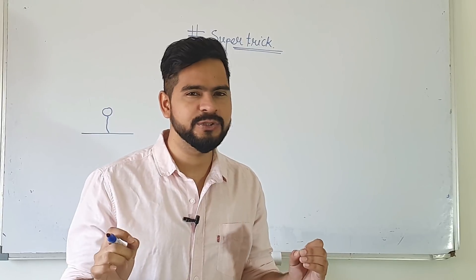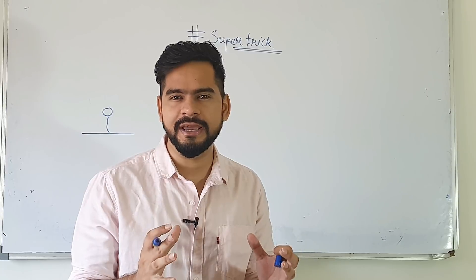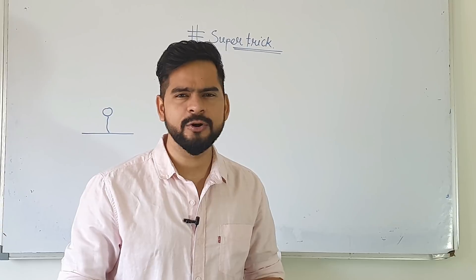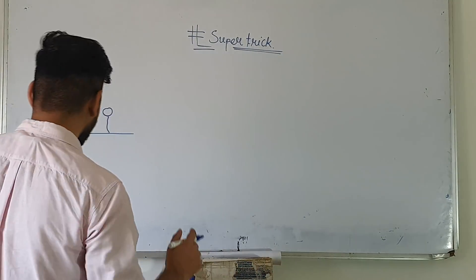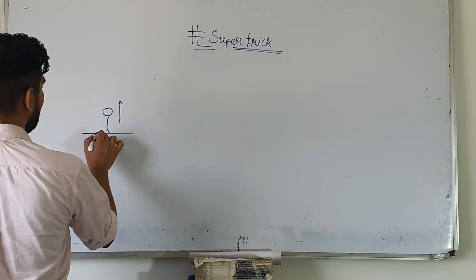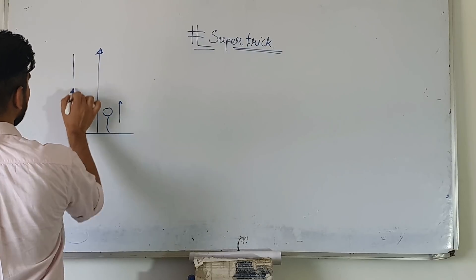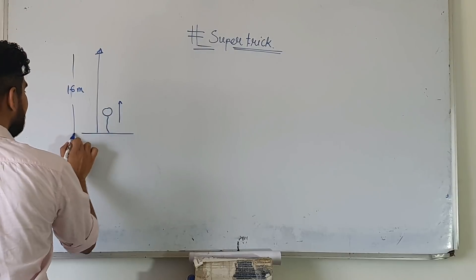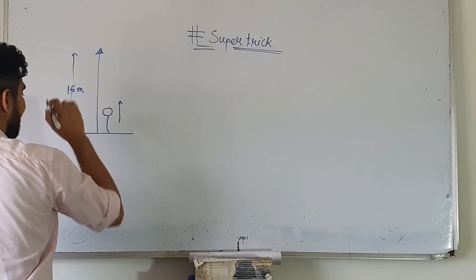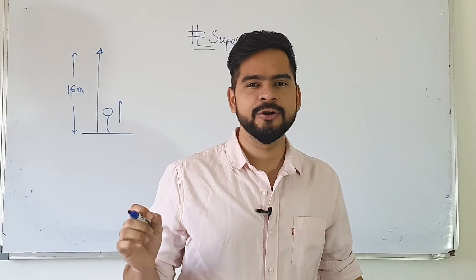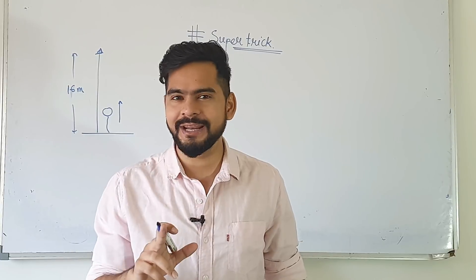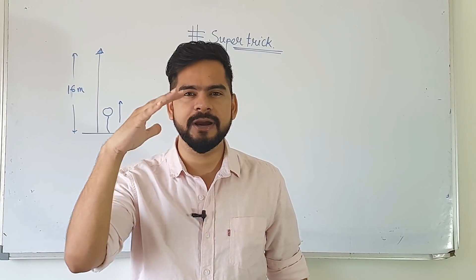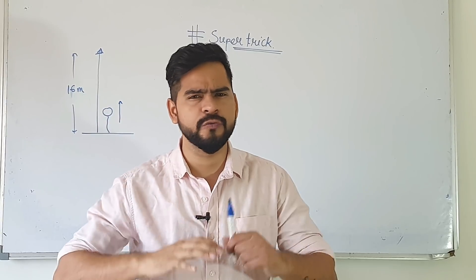If there is a ball or a particle and you have thrown it in the upward direction, and it covers a maximum height — suppose the maximum height is up here — because the maximum height is fixed and then it comes back down. I will talk about the trick and also explain the conventional solution, but first we will see the trick.